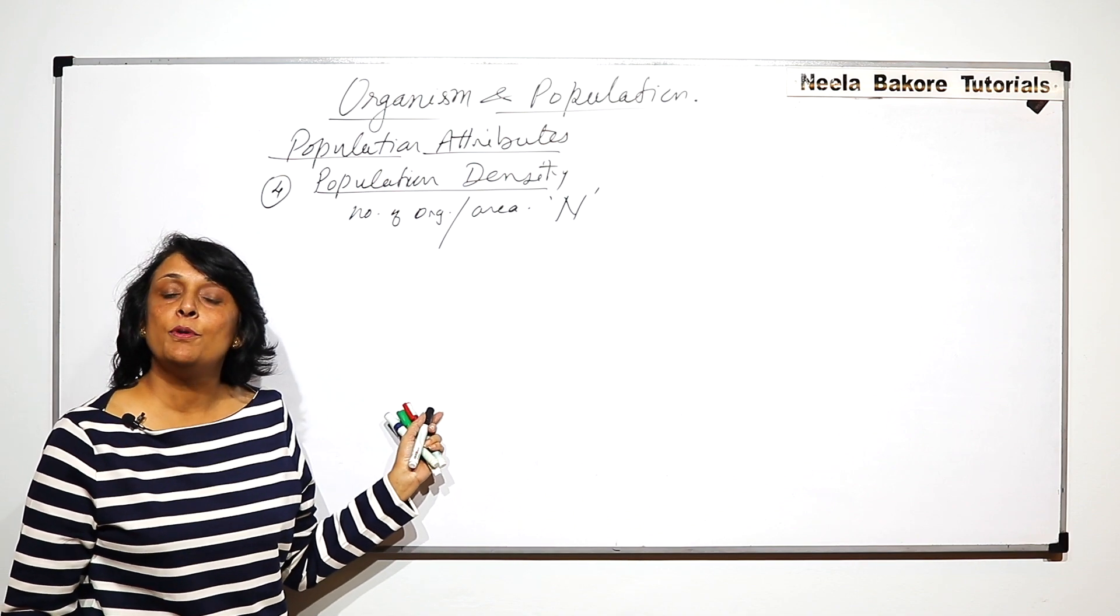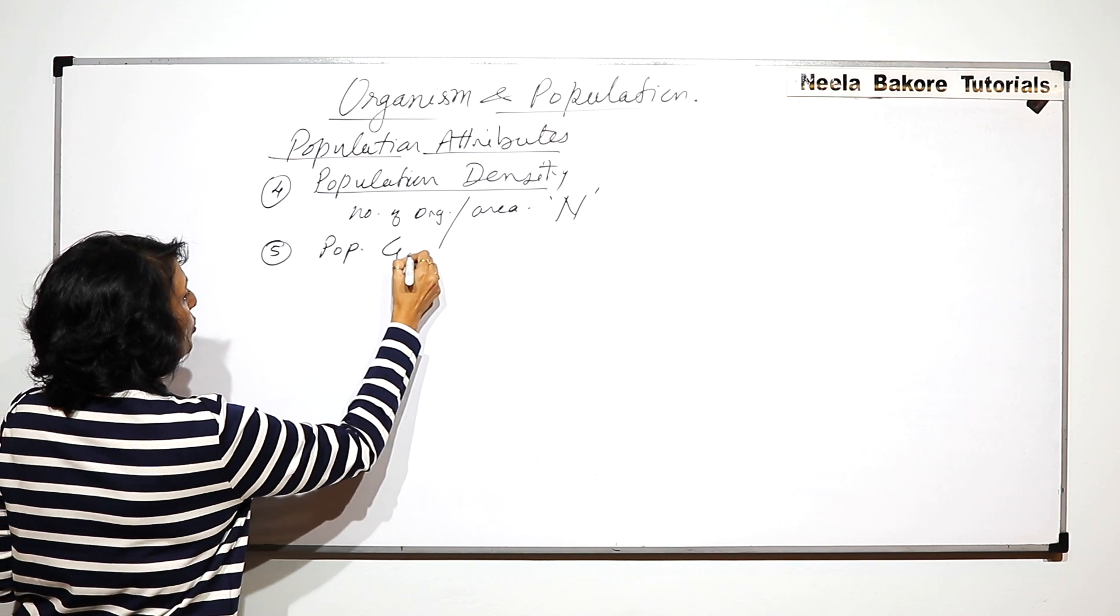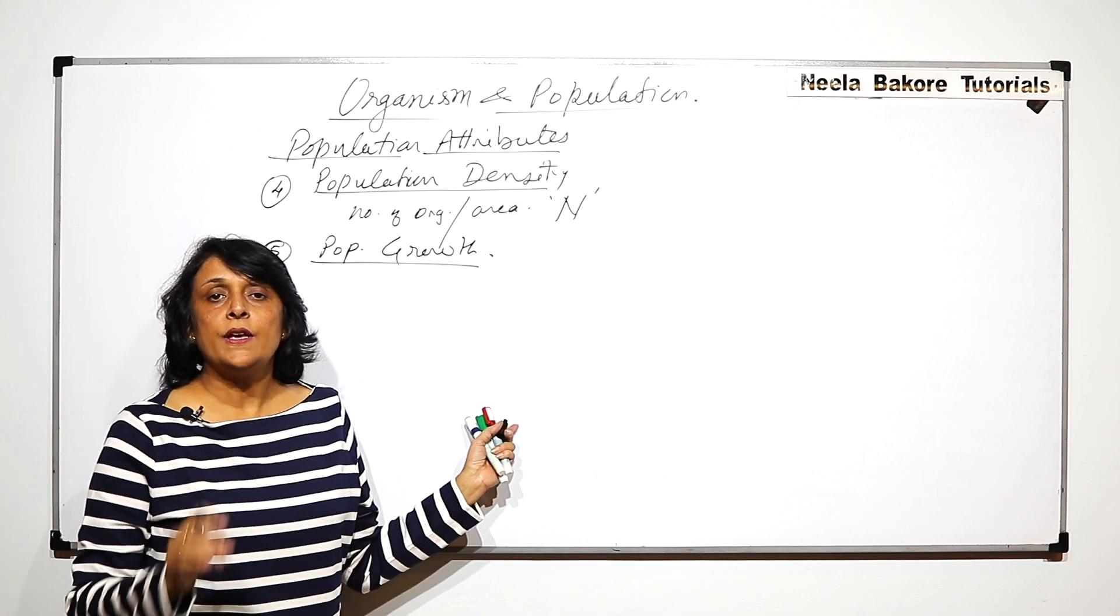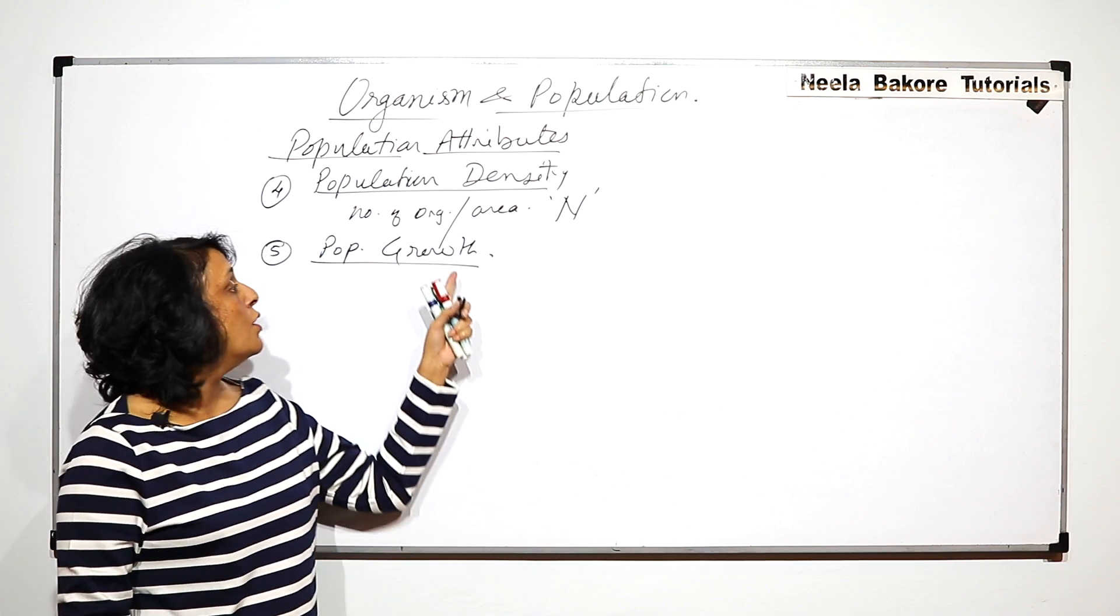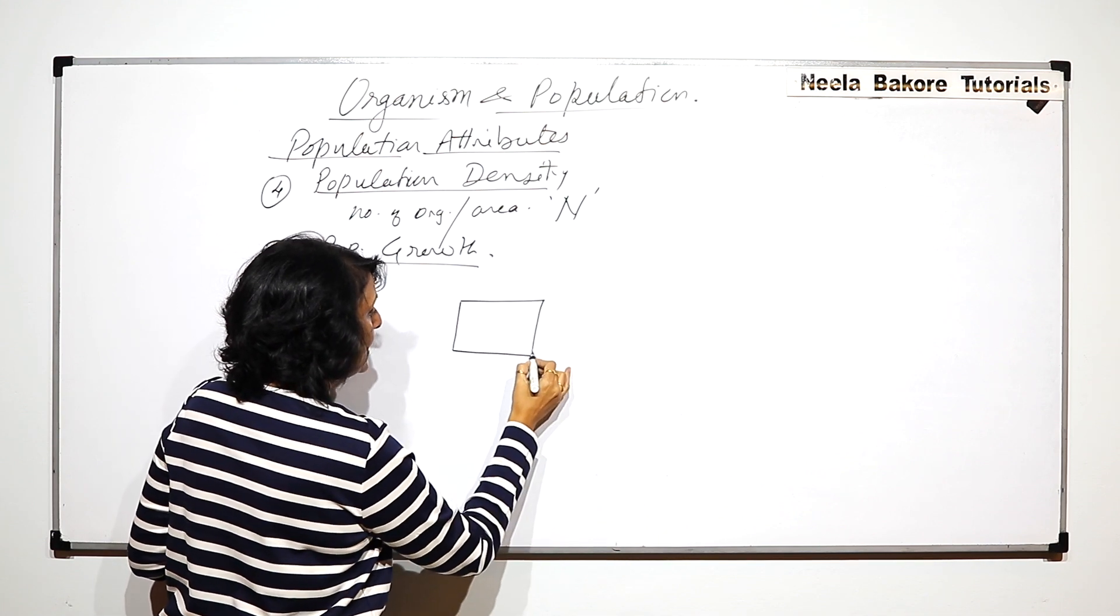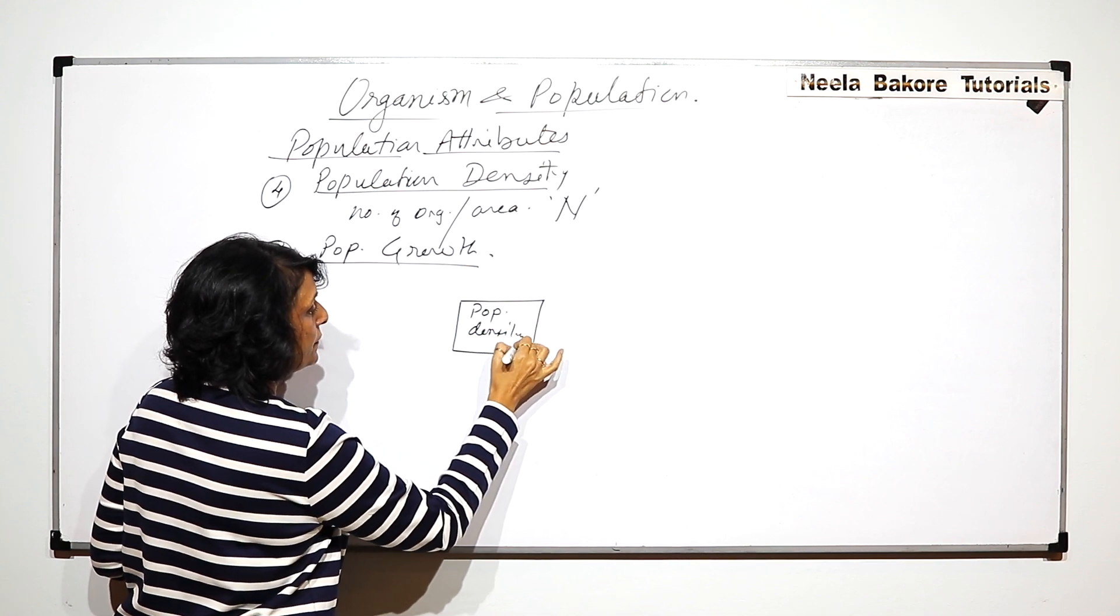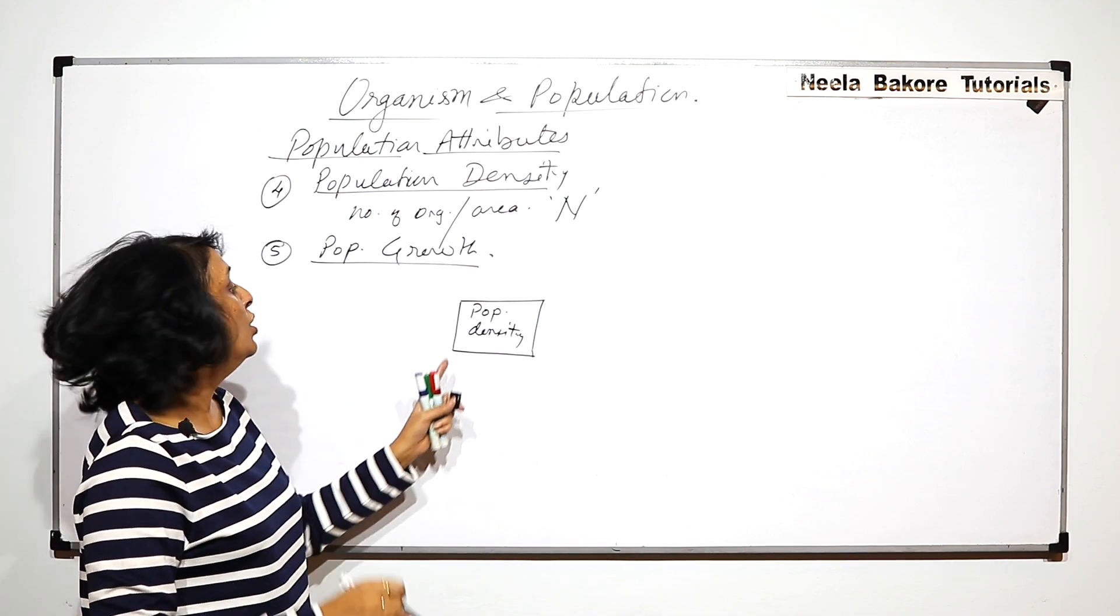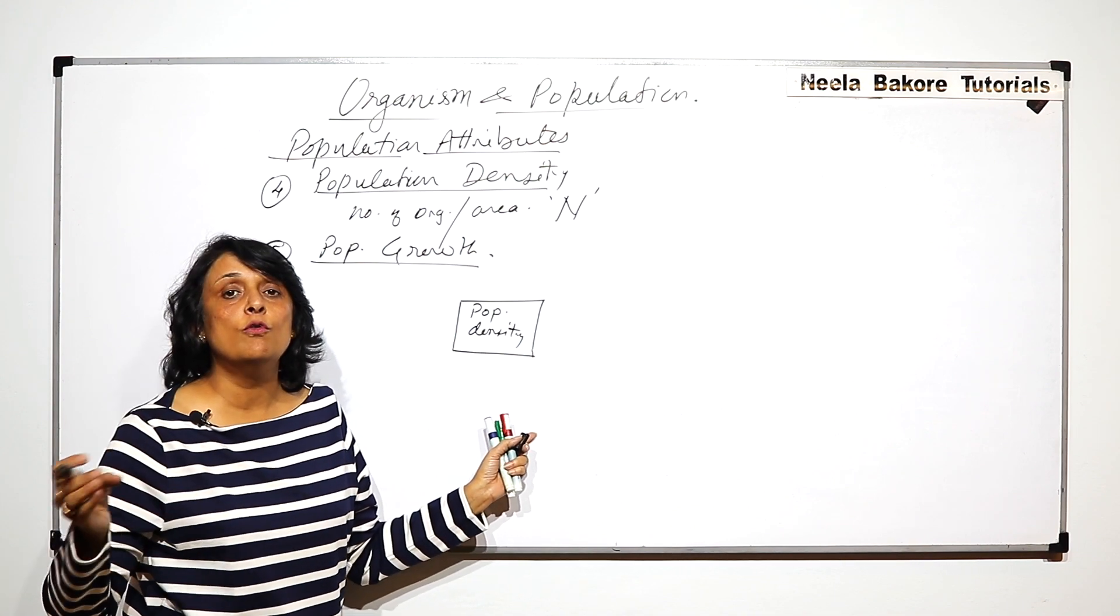The next attribute is population growth. There are four major factors which are responsible for this. If a particular area has a population, there are two things by which organisms can get added to the existing one and two by which organisms can be removed from the existing group.